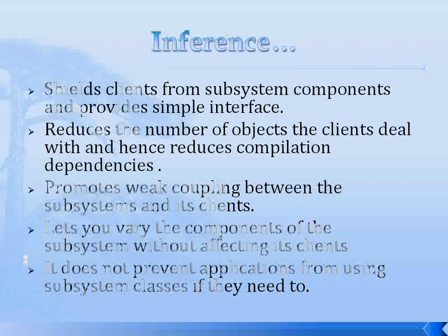The understanding from this whole pattern is: it shields the main client from subsystem components and provides a simple interface, because clients only know about the Facade class and are not bothered about the subclasses. It reduces the number of objects the client deals with. Once dependency reduces, you are not referring to any of the objects or classes of the subsystem directly, so you do not need to recompile every time there is any change in the subsystem — only when there is a change to the Facade class.